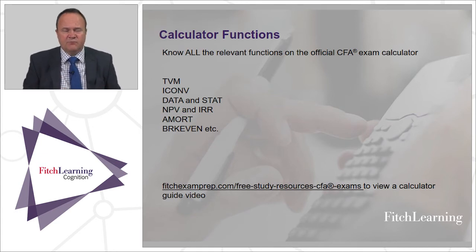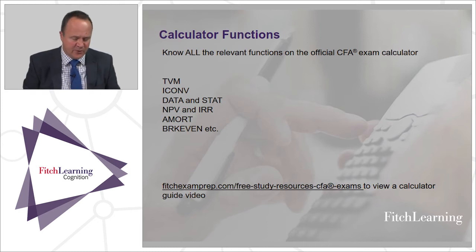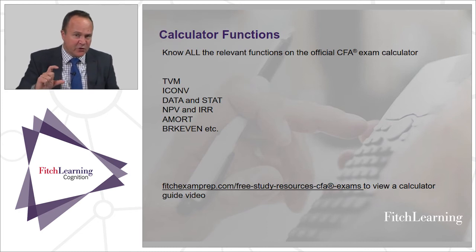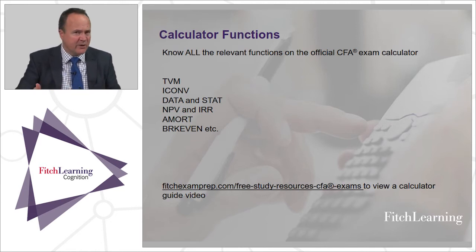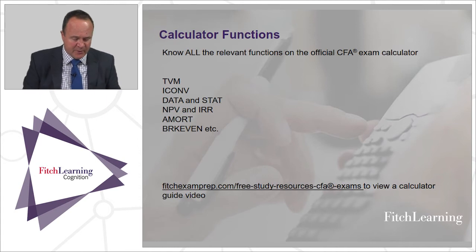ICONV is a really cool function — that's where you can switch between a stated or nominal rate and an effective rate. I'll do a quick recap with one of the examples in a moment.